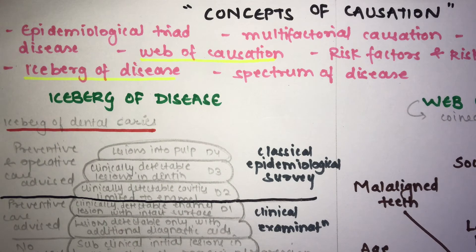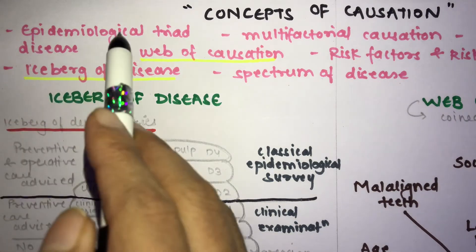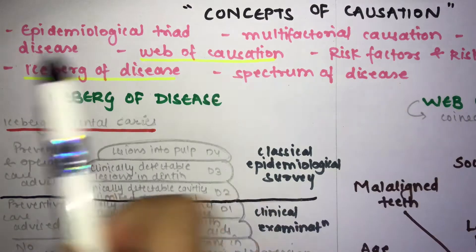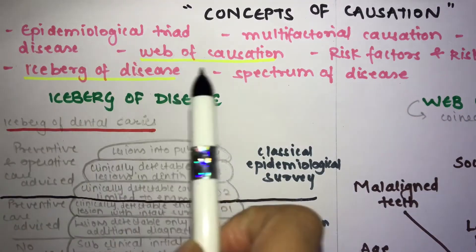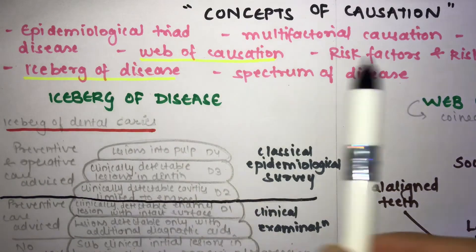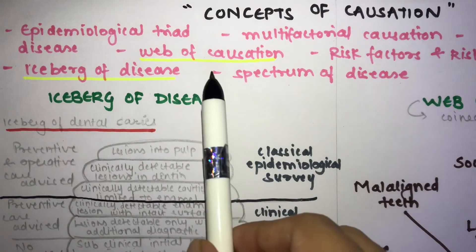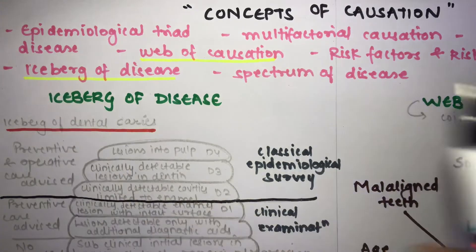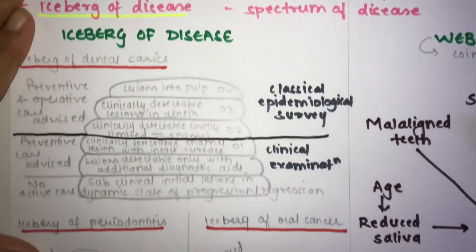The topic is concepts of causation — specifically the concepts of causation of a disease from public health dentistry. There are various concepts: epidemiological triad, multifactorial causation, natural history of disease, web of causation, risk factors and risk group, iceberg of disease, and spectrum of disease. In this video, we are going to explain the web of causation and the iceberg of disease.